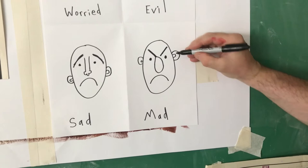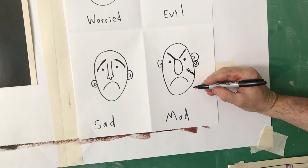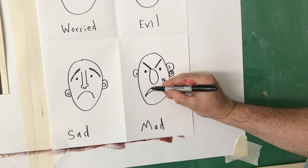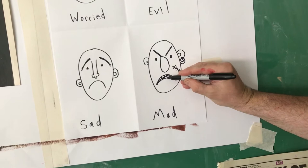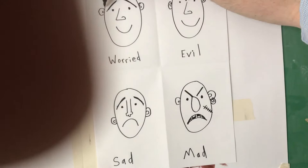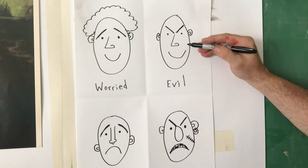Since this guy is mad, I'm going to make him a tough guy. I'll give him an earring, a scar, and some teeth — but he can't control his temper, so he's missing a few teeth. This guy gets in a lot of fights. Now for my worried man — I think worried hair could look like this, kind of funny, like he's having a bad hair day.